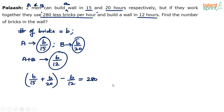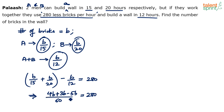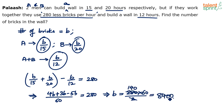Solve for B to get the answer. The LCM of 15, 20, and 12 is 60. So: 15 goes 4 times giving 4B, 20 goes 3 times giving 3B, and 12 goes 5 times giving 5B. So 4B + 3B − 5B = 2B. Therefore 2B/60 = 280, which gives B = 280 × 60 / 2 = 140 × 60 = 8400.